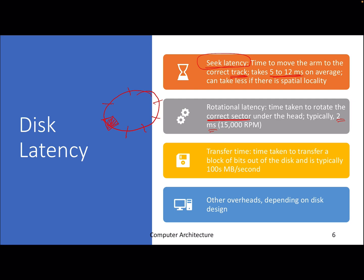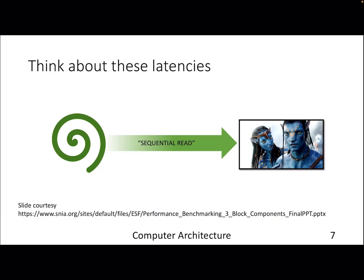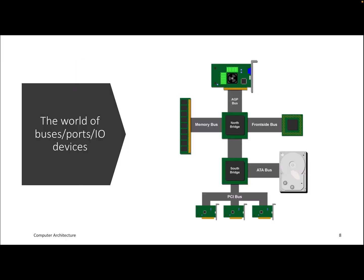Once that's done, the transfer time depends on the bandwidth and how much data you want to transfer. The sum total of these three components determines your disk latency. So next time you load a movie from your hard disk — just double-clicking the file — think about all these latencies and how the data is actually coming from the hard disk to your screen.